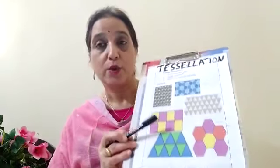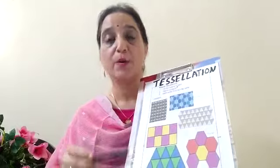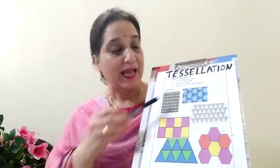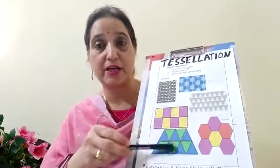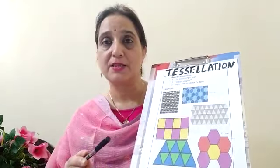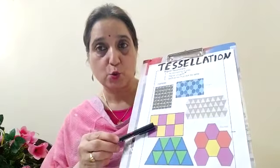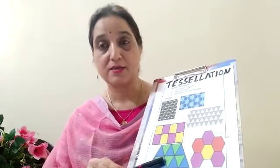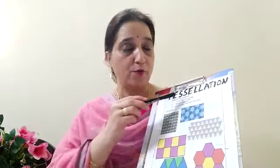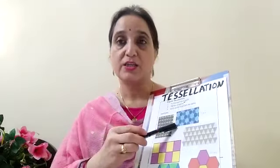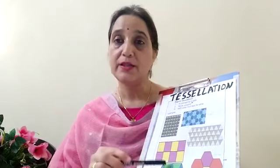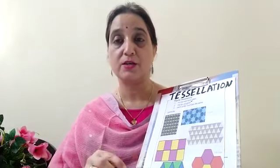We can make tessellations with the help of one shape or more than one shape, and the shapes are arranged in such a way that no gap is left between two shapes. For example, this is a square tessellation, or this is a triangular tessellation. For more information, please go through the worksheets uploaded in my school portal where a link is given — open that link to get a more clear idea about tessellations.